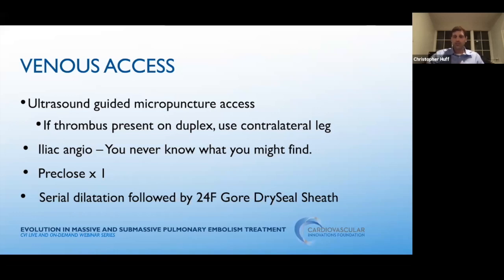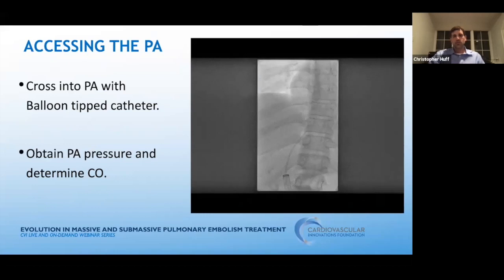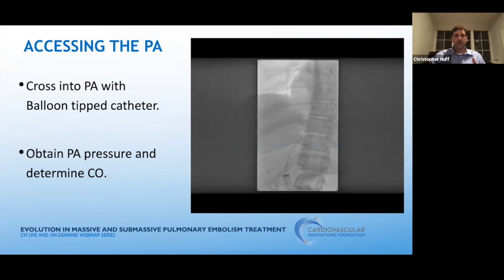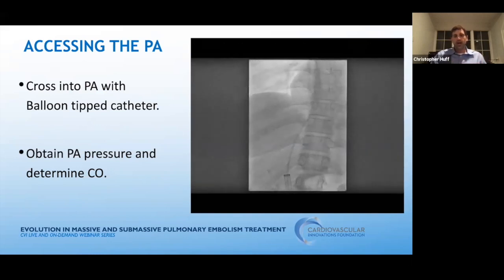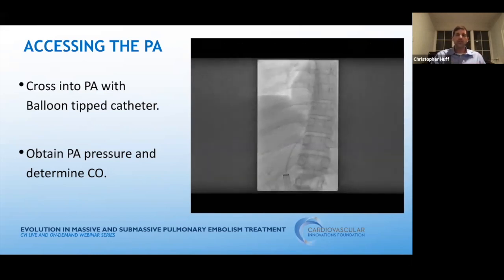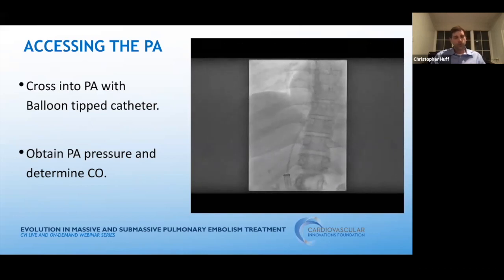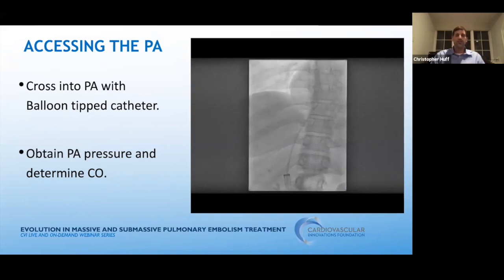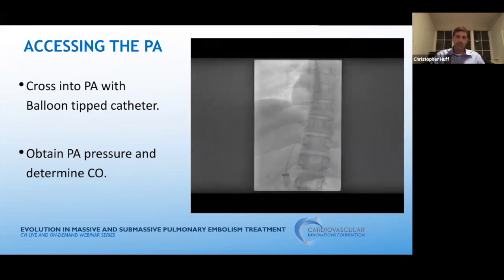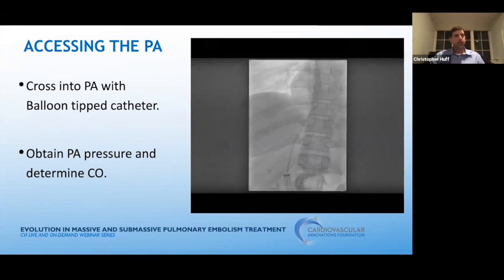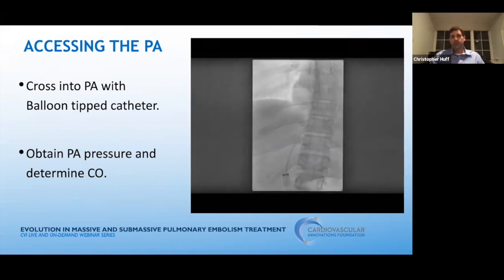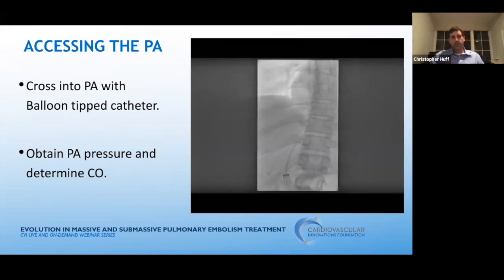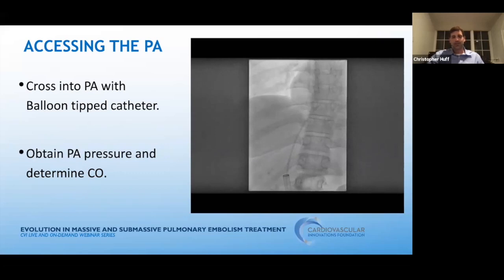I pre-close my groin with one Perclose device, and after serial dilatation, I insert a 24 French Gore dry seal sheath. This may be the most important part of the procedure for preventing mechanical complications in the heart: take your time and float a balloon-tipped catheter through that sheath and into the PA. This will avoid the tricuspid and pulmonic apparatus. The last thing you want is to track a 24 French device underneath the tricuspid apparatus and risk damaging it. You can use a pigtail catheter, but you need to be extremely careful — if the pigtail catches at all, start over.